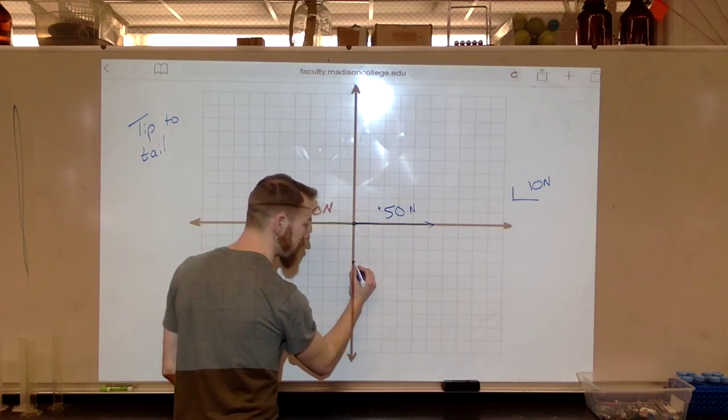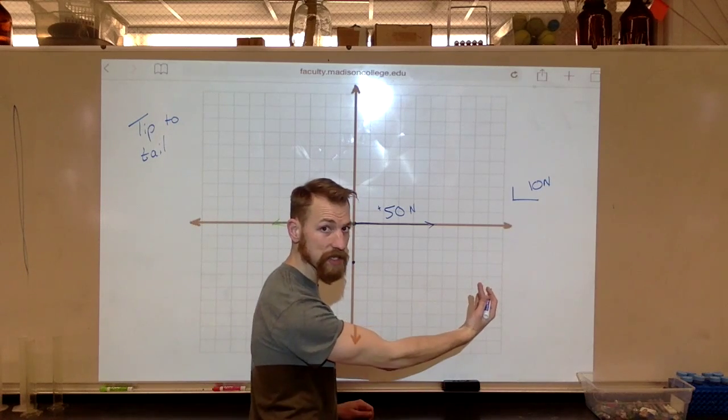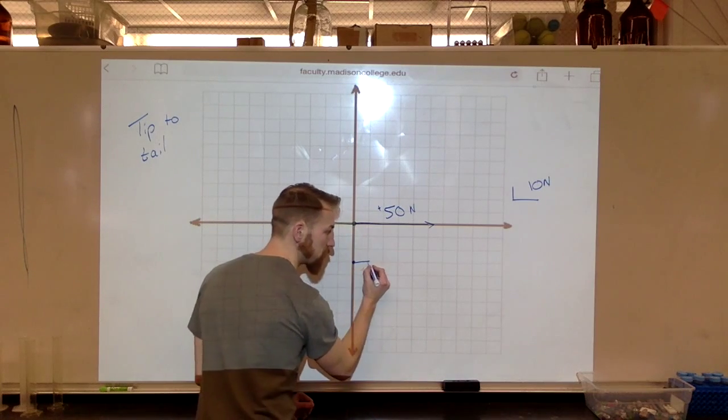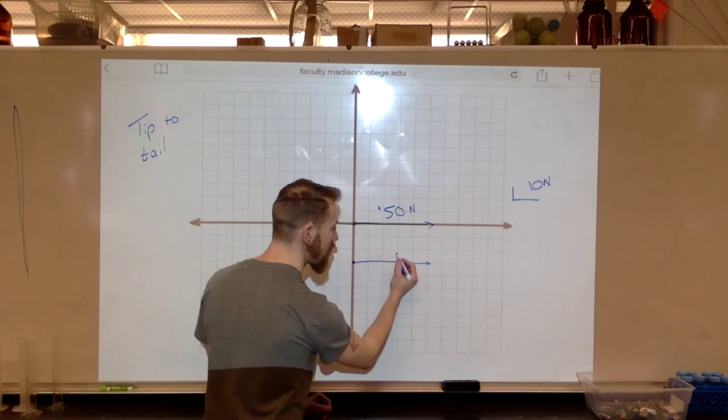I'm going to move this vector so that the tip of it is touching the tail end of this vector. So I'm going to redraw it down here. Because again, so long as the direction stays the same and the magnitude stays the same, the only thing that matters are those two things. This is the same exact vector.